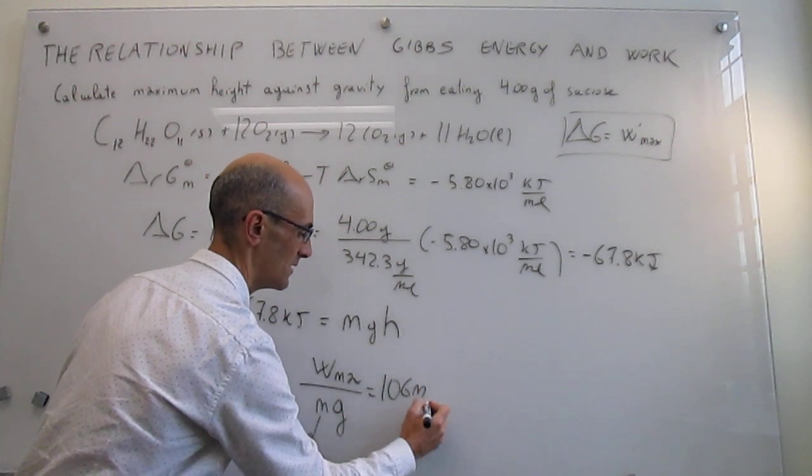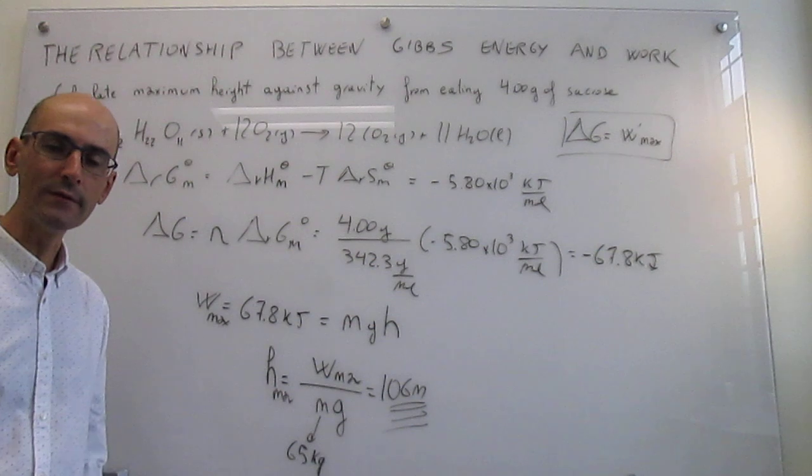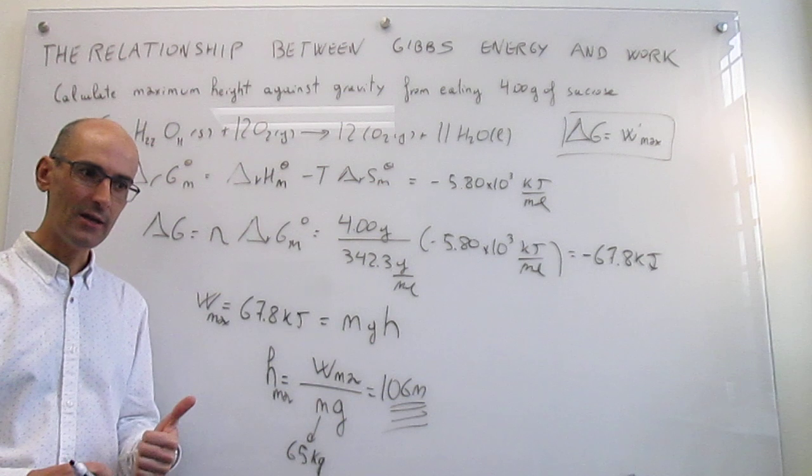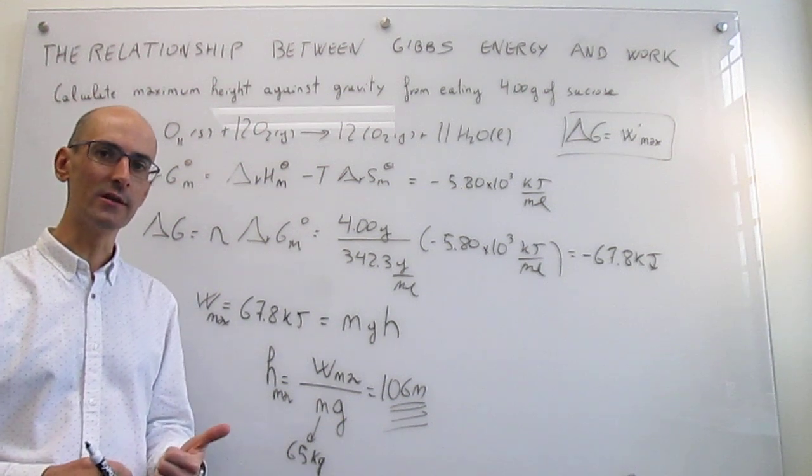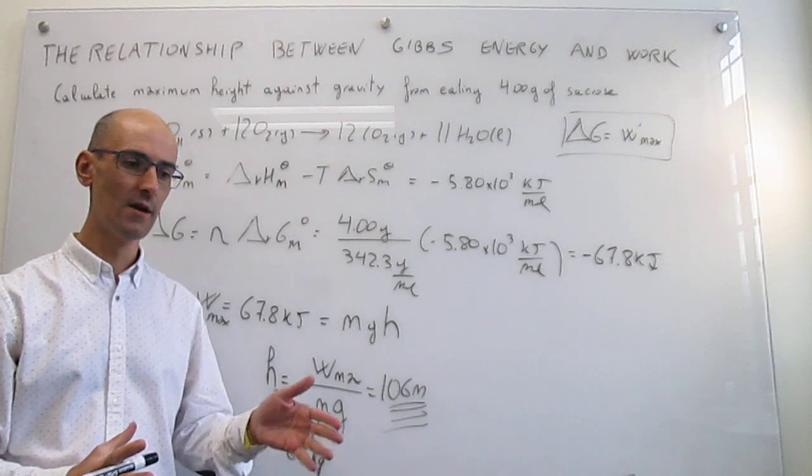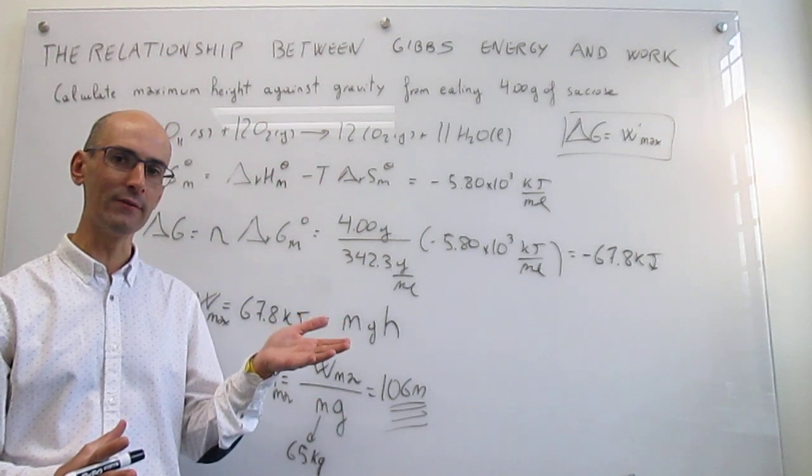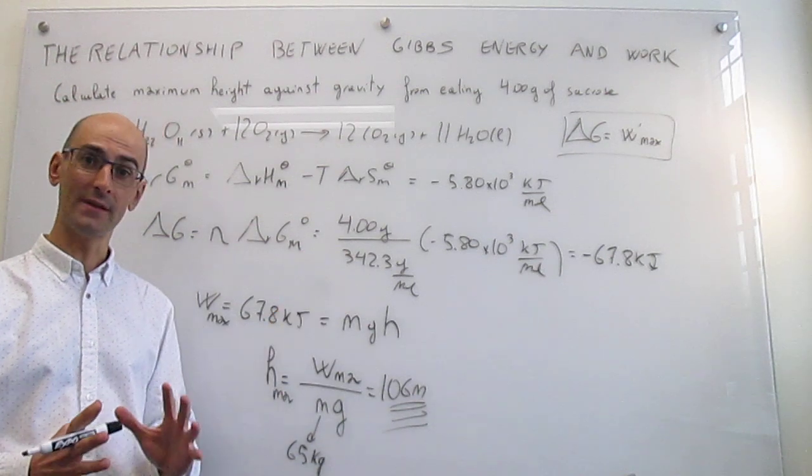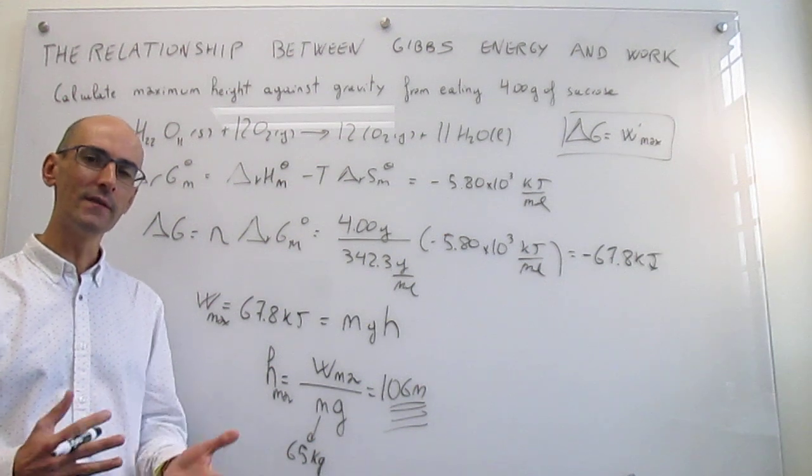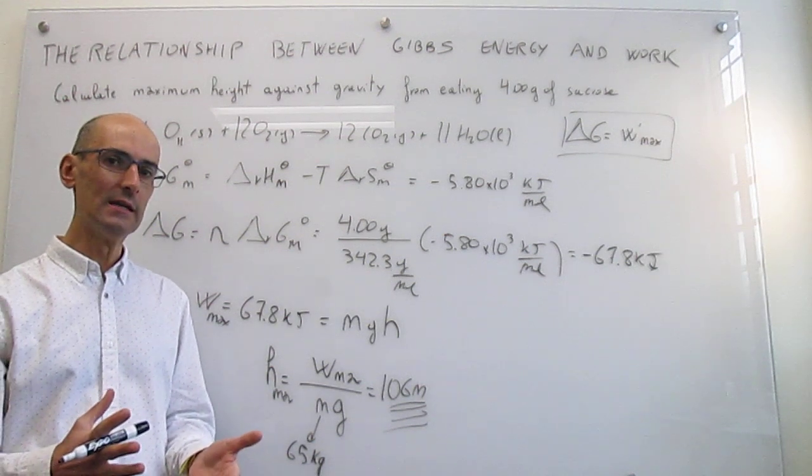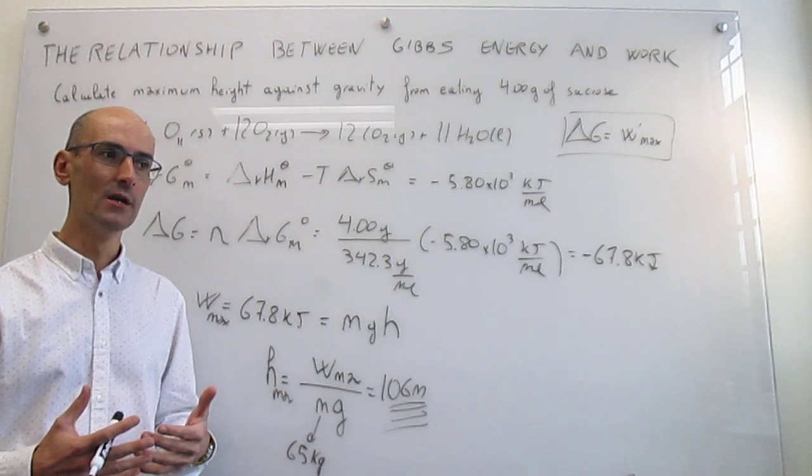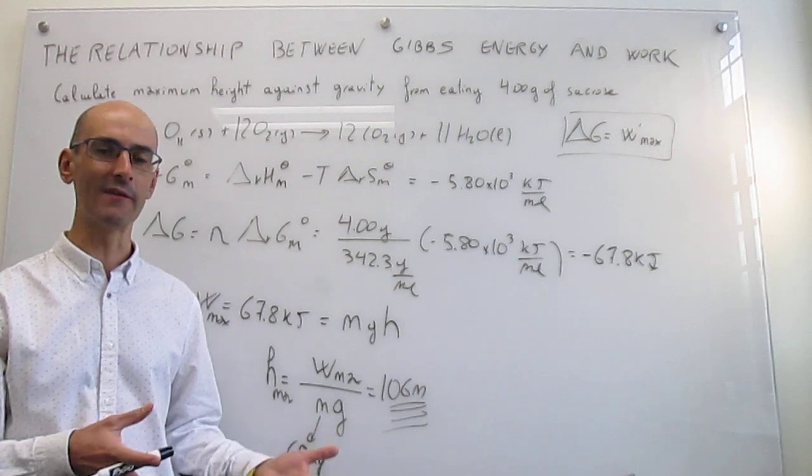A couple of things to wrap up this problem. First, notice that the amount of energy stored in sucrose is huge. Just from 4 grams you can propel a human 106 meters or about 300 feet up in the air. That's a lot of energy for just four grams of a substance. The second thing that is important is that obviously that is just going to be the upper limit for height.